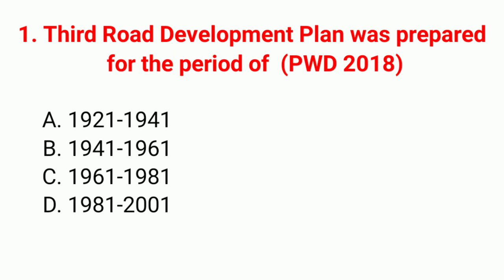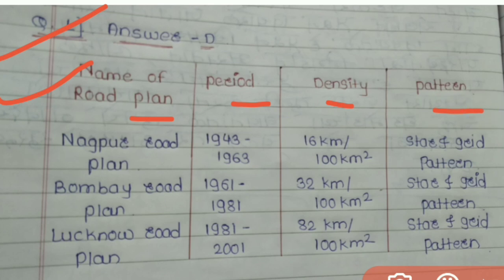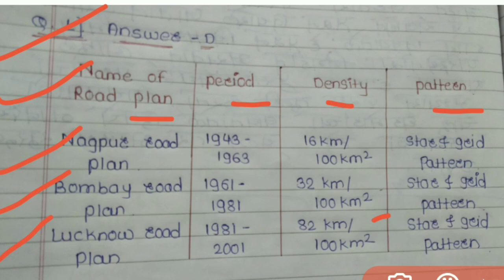Question 1: The third road development plan was prepared for the period — correct answer is option D: 1981 to 2001. The road plans by name, period, density, and pattern are: Nagpur road plan (1943–1963), density 16 km per 100 km², star and grid pattern; Bombay road plan (1961–1981), density 32 km per 100 km², star and grid pattern.